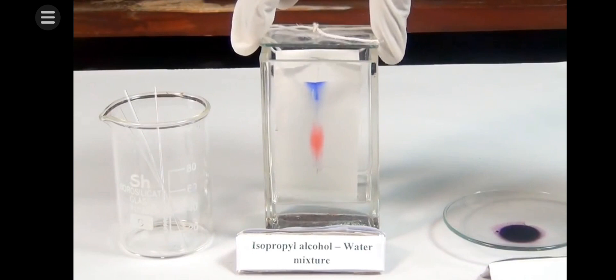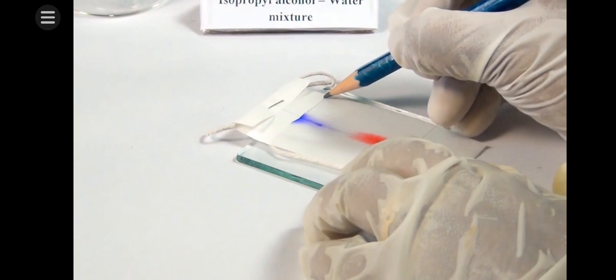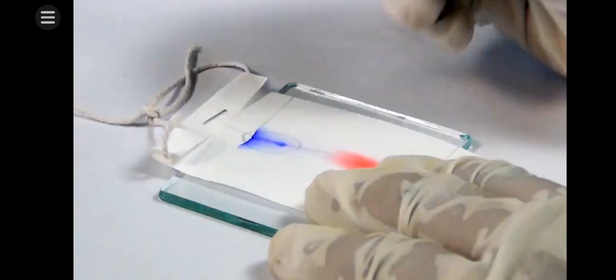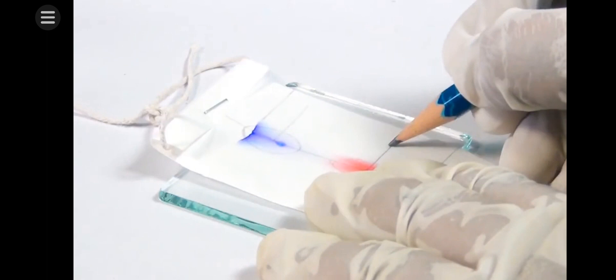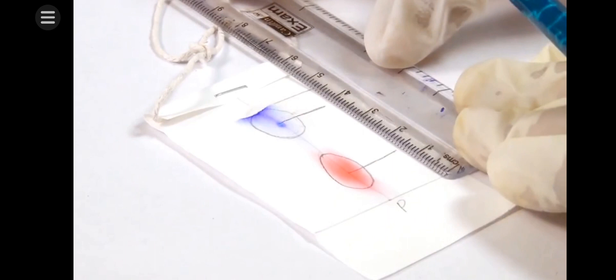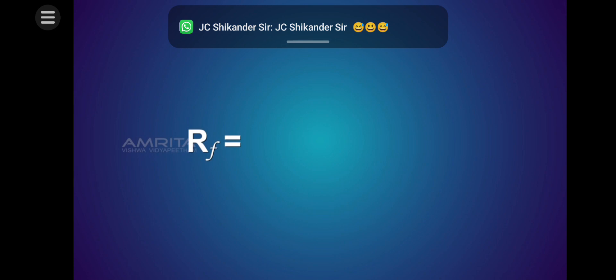Take the filter paper out of the chamber and mark the distance that the solvent has risen on the paper with a pencil. This is called the solvent front. Dry the filter paper and put pencil marks on the centre of the red and blue ink spots. Measure the distance of the two spots from the original line and the solvent from the original line.